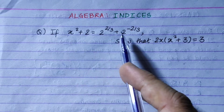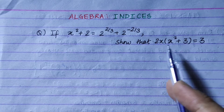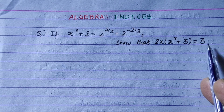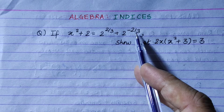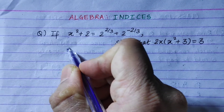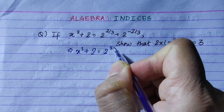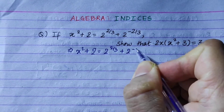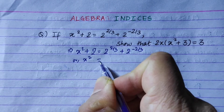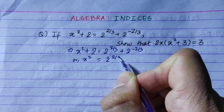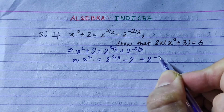We have the condition x squared plus 2 equals 2 to the power 2/3 plus 2 to the power minus 2/3. We need to show that 2x cubed plus 6x is equal to 3. Or equivalently, x squared equals 2 to the power 2/3 plus 2 to the power minus 2/3.